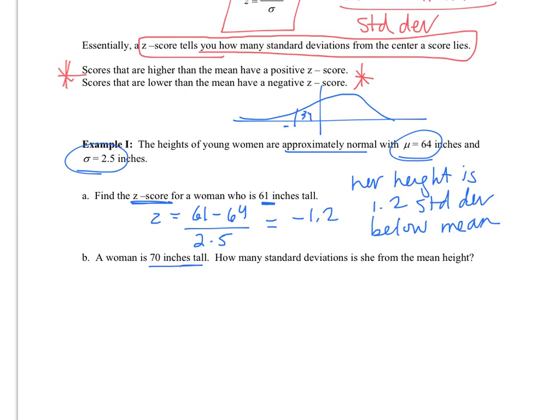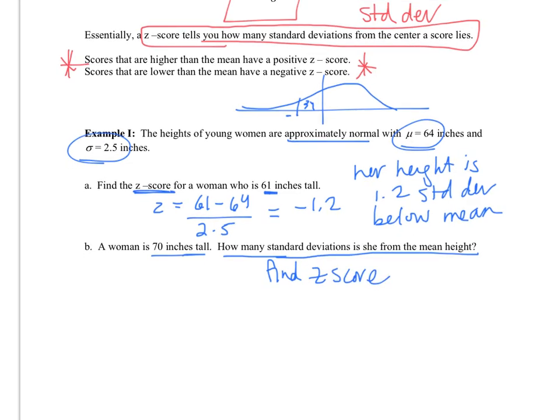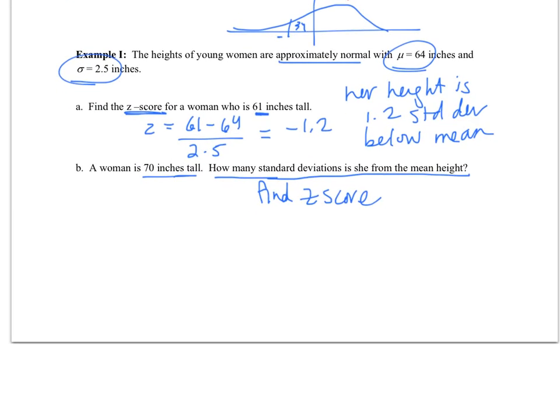Next, we have a woman who is 70 inches tall. We want to know how many standard deviations she is from the mean. In this case, I am also asking you to find the z-score, just asked for it in different terms. I would do 70 minus 64 divided by 2.5, and I get 2.4. So she is 2.4 standard deviations above the mean.